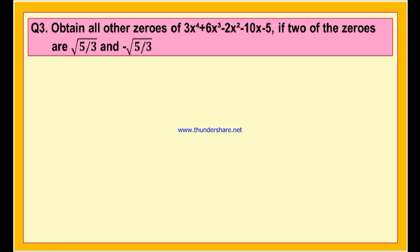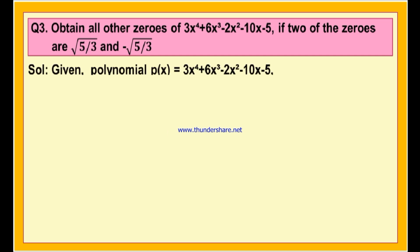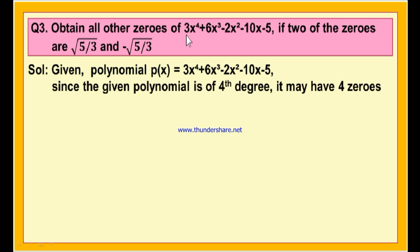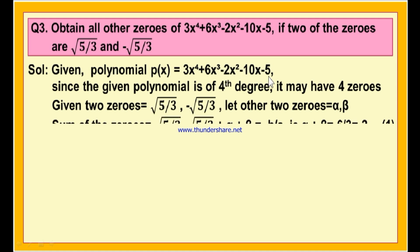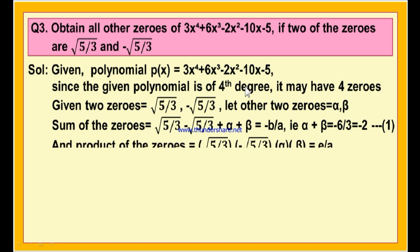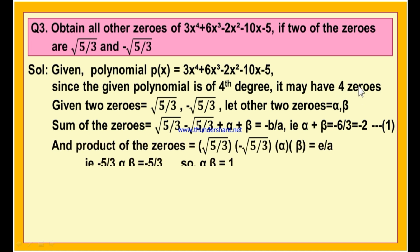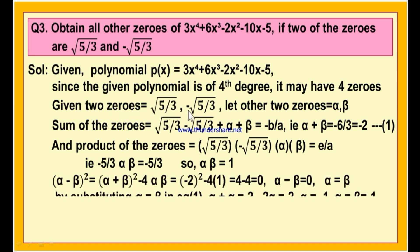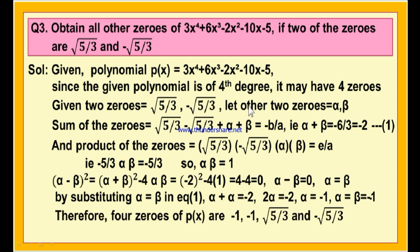Let us see the solution now. It is given that the polynomial P(x) = 3x⁴ + 6x³ - 2x² - 10x - 5. Since the given polynomial is of 4th degree, it may have 4 zeros, and we have been given 2 zeros: one is √(5/3) and the second is -√(5/3). There may be 2 more zeros. Therefore, let us assume that the other unknown zeros are alpha and beta.